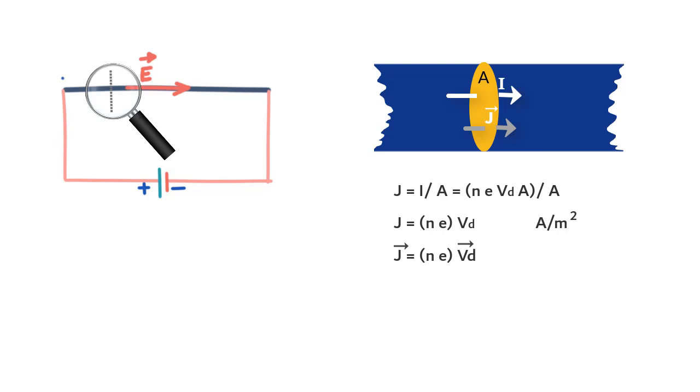One quick observation you might like to make is that current density is treated as a vector, but not the current itself. And the reason is that vector J describes how the charge flows at a certain point, and the direction of the vector indicates the direction of the flow at that point.